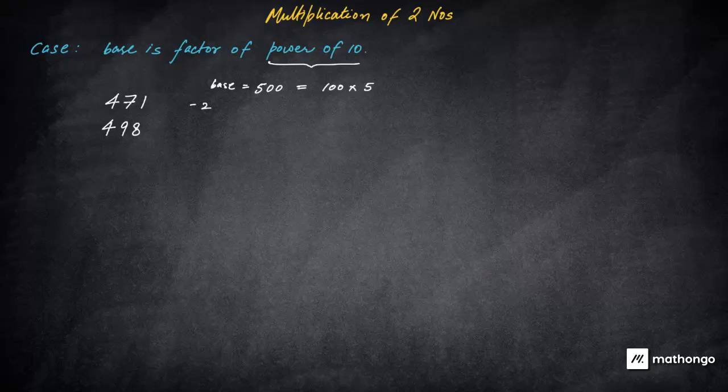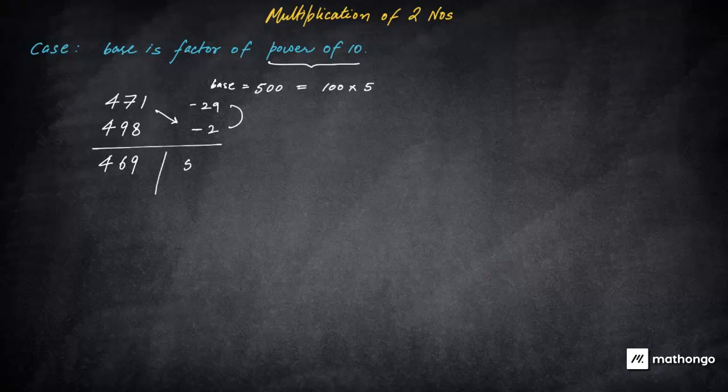Will you agree with me that both of the numbers are actually closer to 500, which is 5 into 100? So I'll take the base as 500. So the base is here 500, which can be written as 100 into 5. So you will see the deviation here. The deviation is here minus 29, and here it is minus two, this is the deviation. Again, what you will do the same step cross addition, and make sure you do the cross addition for things which you feel you're comfortable with. For example, I'm comfortable with 471 and minus two. So this will become 469.